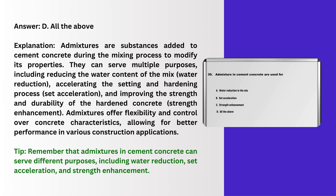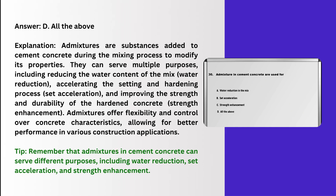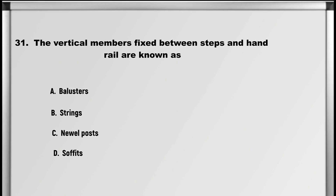Explanation: Admixtures are substances added to cement concrete during the mixing process to modify its properties. They can serve multiple purposes, including reducing the water content of the mix (water reduction), accelerating the setting and hardening process (set acceleration), and improving the strength and durability of the hardened concrete (strength enhancement). Admixtures offer flexibility and control over concrete characteristics, allowing for better performance in various construction applications. Tip: admixtures in cement concrete can serve different purposes, including water reduction, set acceleration, and strength enhancement.